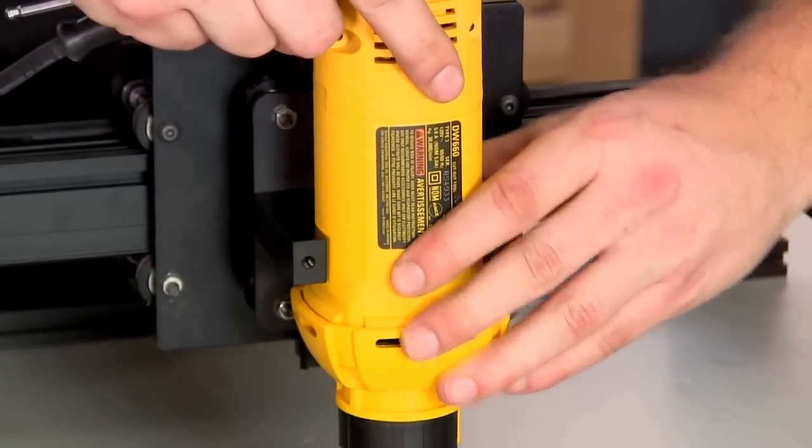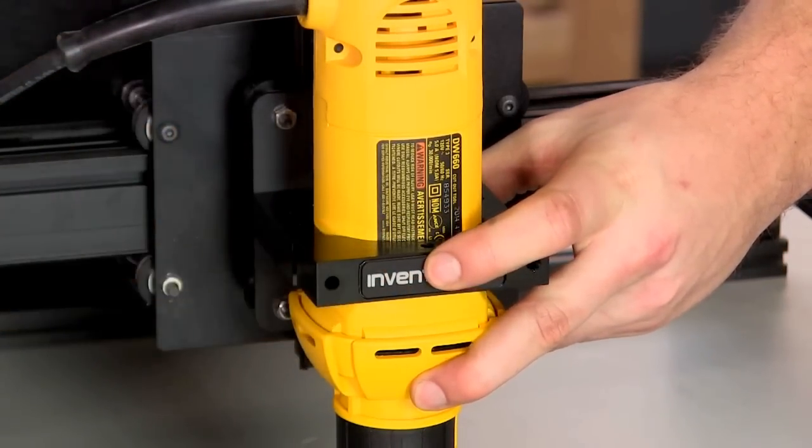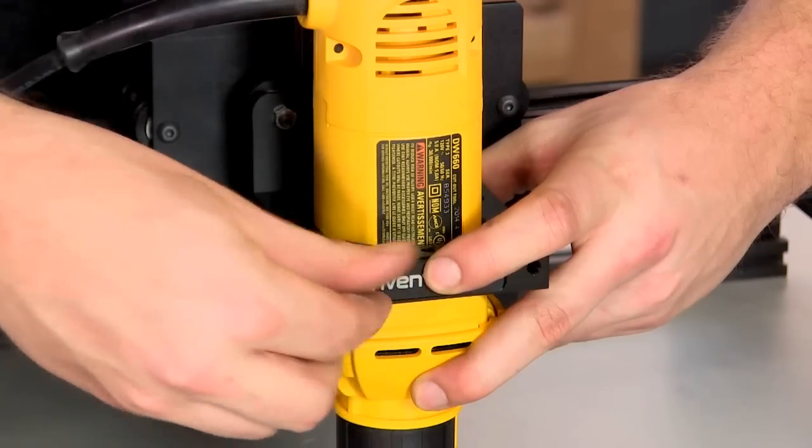Put the front part of the clamp over the spindle, and thread the long screws with lock washers through the front part of the clamp into the back side.